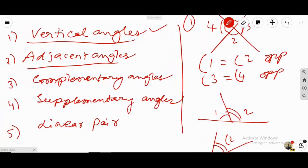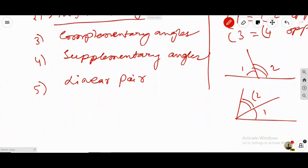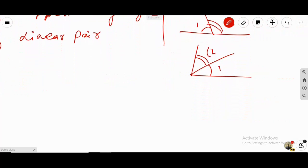And number 3, we talk about complementary angles. If the two angles add up to 90 degrees exactly, let's say this is 30 degrees and this is 60 degrees here, they add up to 90 degrees. So 60 plus 30 is equal to 90.